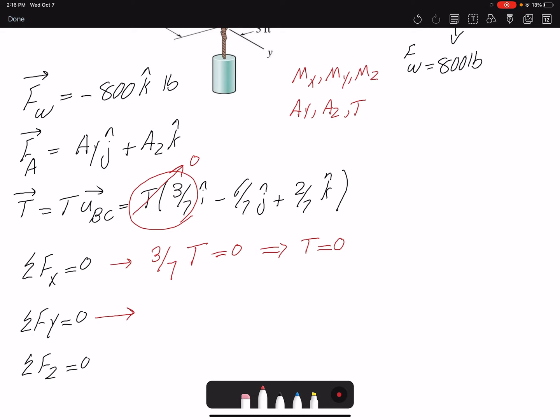So summation of forces in Y. I only have AY. So AY equals zero. Summation of forces in Z. I have AZ here and negative 800. So AZ minus 800 would be zero. So AZ would be 800 pounds.